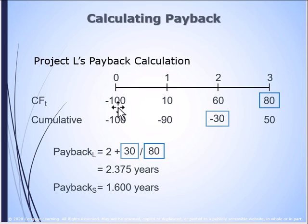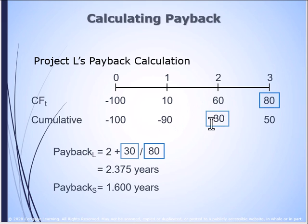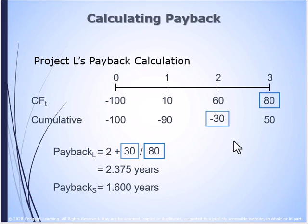Here's Project L: we spent $100, then we got $10, then $60, then $80. We got $10 back the first year, leaving $90 still to recover. We got $60 the next year, leaving $30 left to recover at the end of year two. In year three we got $80, which is more than the $30 remaining, so somewhere in year three we recovered all of the cash flows. To calculate this, you take the cumulative amount still owed, divide by the amount coming in — that tells you what percentage of that cash flow was needed to reach zero.